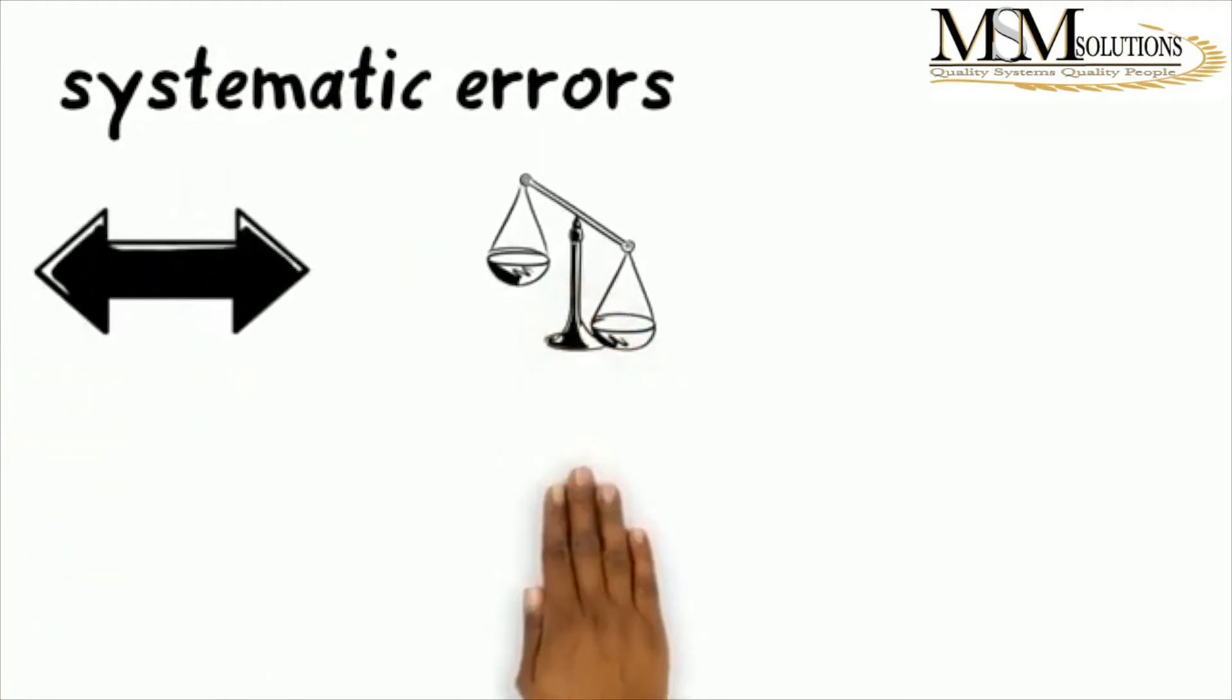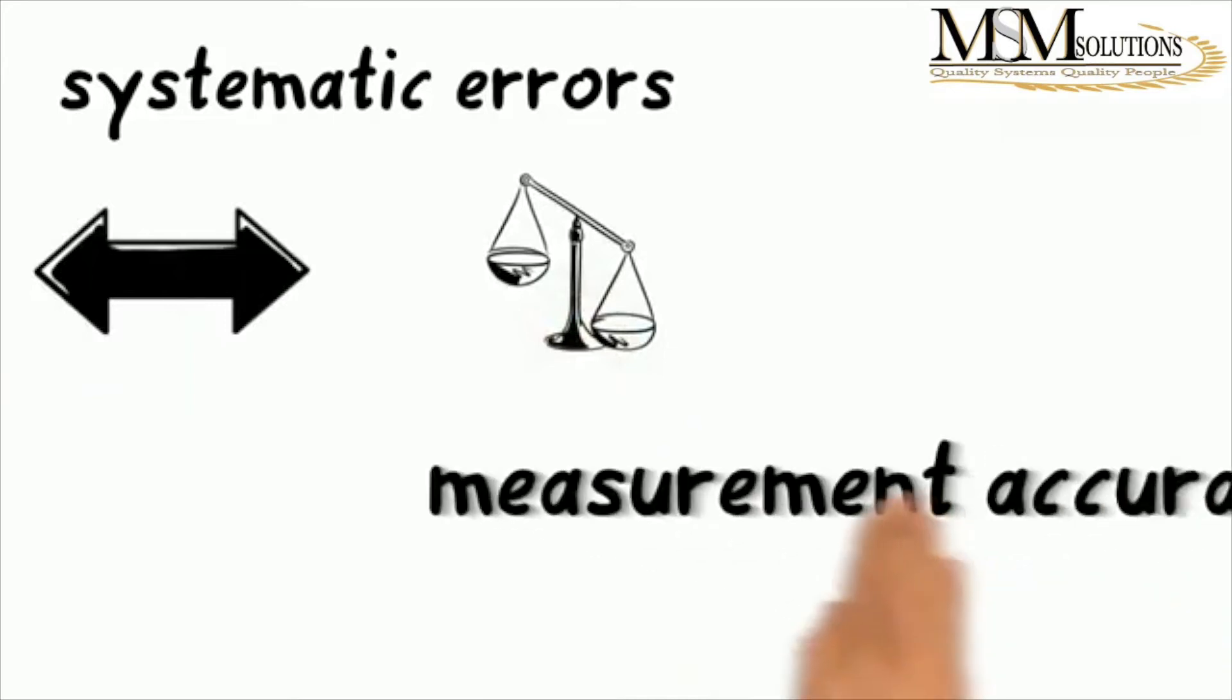So systematic errors, as I've mentioned before, can be predictable. They are either constant or have a proportion, a similar proportion to your measurement value. So systematic errors primarily influence measurement accuracy.